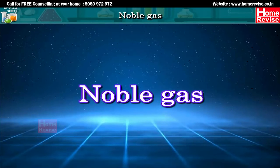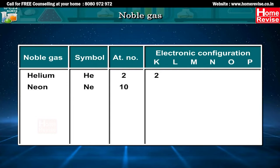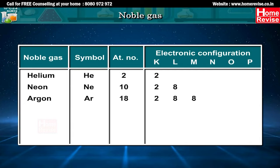Noble gases: Helium, symbol He, atomic number 2, has electronic configuration 2. Neon, symbol Ne, atomic number 10, electronic configuration 2, 8. Argon, symbol Ar, atomic number 18, its electronic configuration is 2, 8, 8.